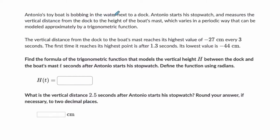Antonio's toy boat is bobbing in the water next to a dock. Antonio starts his stopwatch and measures the vertical distance from the dock to the height of the boat's mast, which varies in a periodic way that can be modeled approximately by a trigonometric function. The vertical distance from the dock to the boat's mast reaches its highest value of negative 27 centimeters every three seconds. The first time it reaches its highest point is after 1.3 seconds, and its lowest value is negative 44 centimeters. Find the formula of the trigonometric function that models the vertical height h between the dock and the boat's mast t seconds after Antonio starts his stopwatch. Define the function using radians.